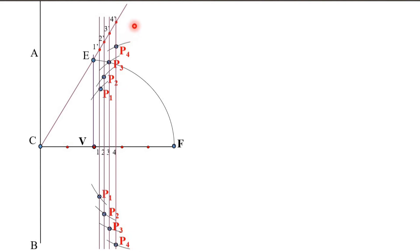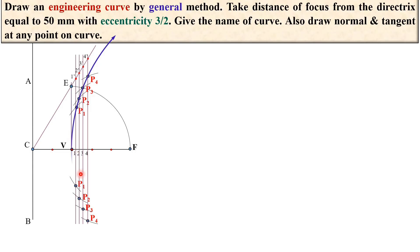Now join all the points with a smooth curve. Keep in mind it must also pass through the vertex point V. The curve should be very smooth and drawn with arrows at both ends. This is your first answer — the engineering curve.